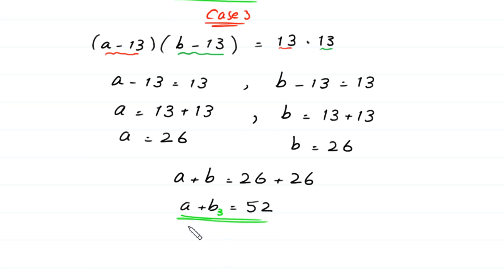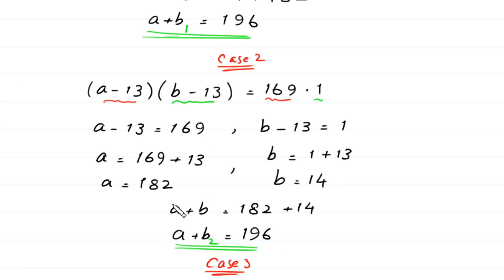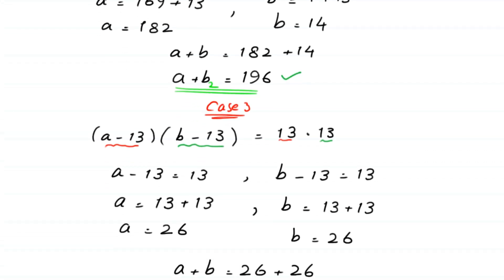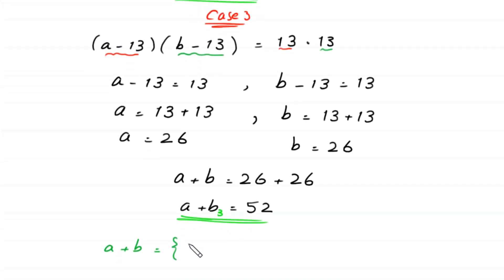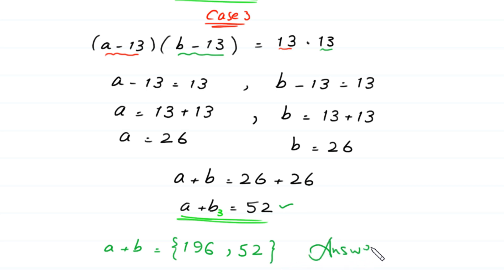So finally, we have got two distinct values of A plus B, because the first and second cases give the same result. The set of A plus B is equal to {196, 52}. This is the final answer to this equation.